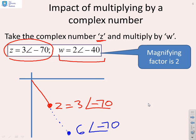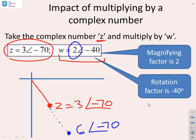We're also going to rotate by an angle minus 40, which means in a clockwise direction. So we're going to end up all the way over here with 6 arg minus 110. So you can see we've interpreted our multiplication by w as a stretching or scaling followed by a rotation.